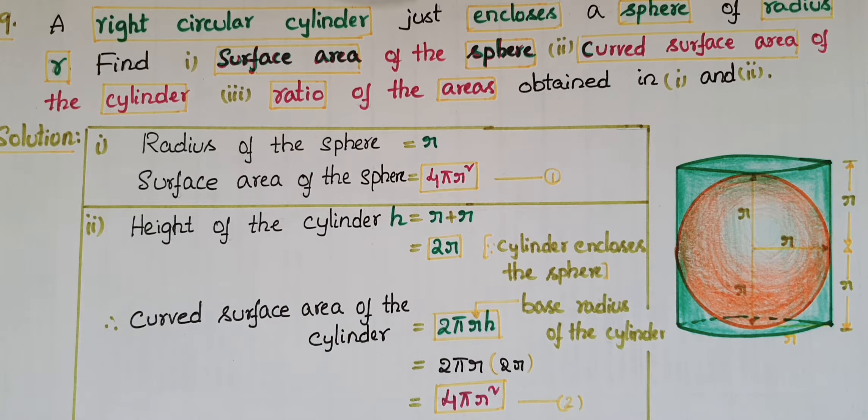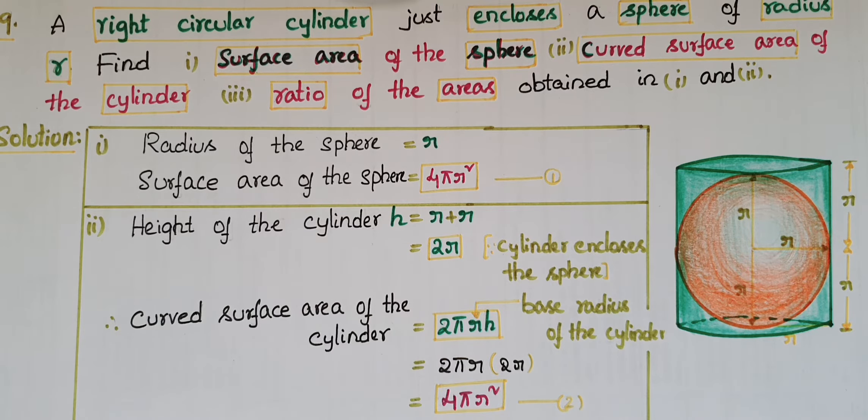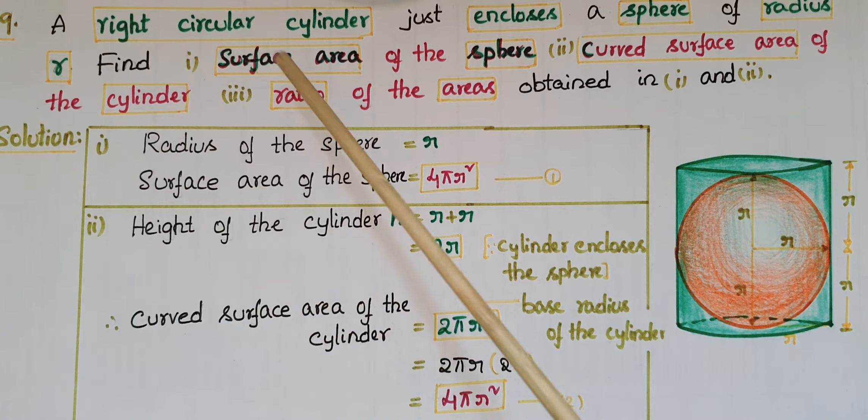Hello everyone, today I am going to tell the solution of ninth problem from exercise 13.4 from surface areas and volumes from NCERT class 9. A right circular cylinder just encloses a sphere of radius r. Find: (i) surface area of the sphere, (ii) curved surface area of the cylinder, (iii) ratio of the areas obtained in 1 and 2.